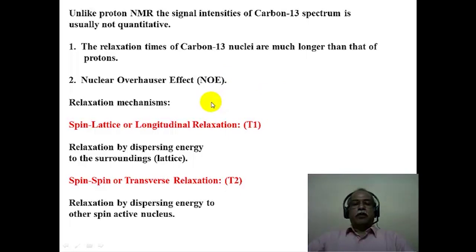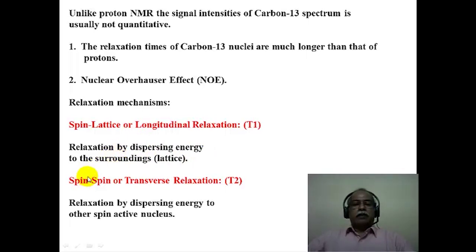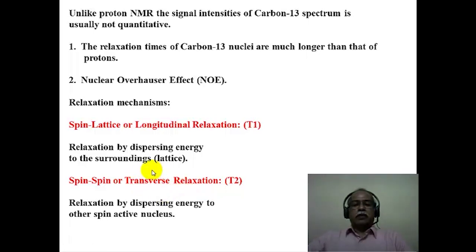There are two relaxation mechanisms by which an excited carbon spin returns to the ground state. The first is spin-lattice relaxation (longitudinal relaxation), designated T₁, where energy is dispersed to the surroundings (solvent or lattice). The second is spin-spin relaxation (transverse relaxation), where excess energy is transferred to another spin-active nucleus in the molecule — for example, carbon can pass energy to fluorine, phosphorus, or hydrogen.